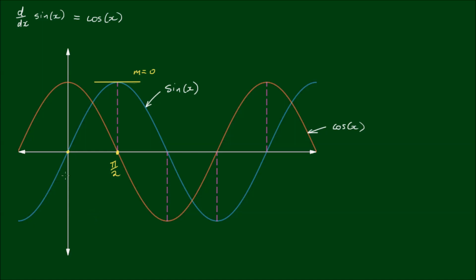This occurs at the value of x of π/2. When x equals zero, the tangent line has a slope of one. When x equals π, the tangent line has a slope of negative one. If we look at the corresponding points of the cosine curve, we see that cosine has a value of one here, which is the same as the slope of the sine curve at x equals zero. At x equals π/2, cosine has a value of zero, which is the same as the slope of the sine curve at x equals π/2.